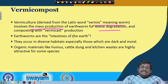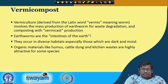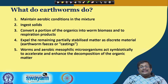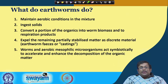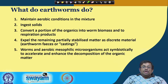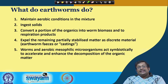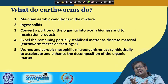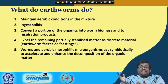What the earthworms actually do: they maintain aerobic conditions in the mixture. They ingest soil, convert a portion of the organics into worm biomass and respiration products, and expel the remaining partially stabilized matter as discrete material called castings — these are the worm casts or vermicompost. Worms and aerobic mesophilic microorganisms act symbiotically to accelerate and enhance the decomposition of organic matter.